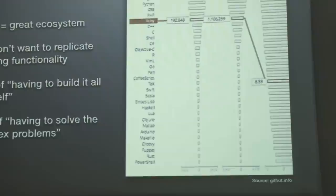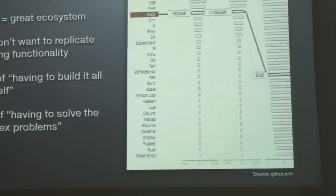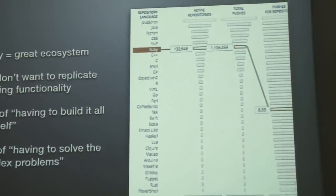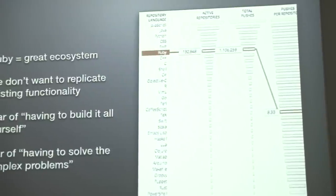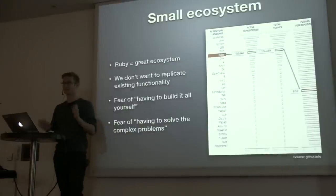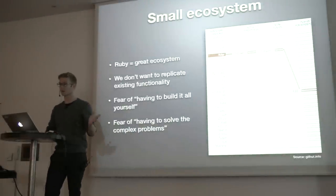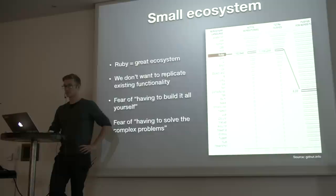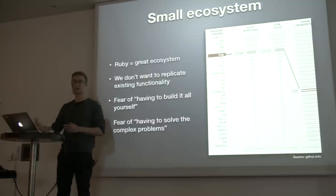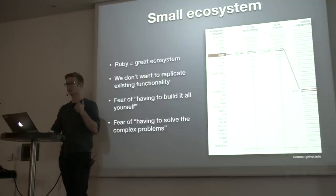What we don't want to do is replicate existing functionality. I don't want to have to write another user authentication scheme. I especially don't want to write hard things like encryption. That's something I really don't want to deal with when I'm trying to get a time-critical product out. So there was this fear of having to do all these things myself — things like talking to databases, getting data in and out. Those are complex things, and we were afraid Elixir wasn't there to solve them.